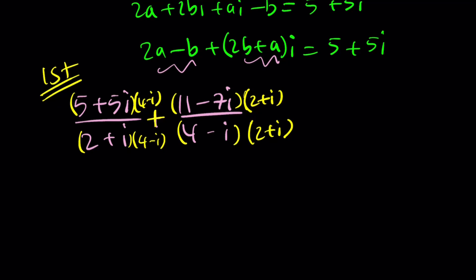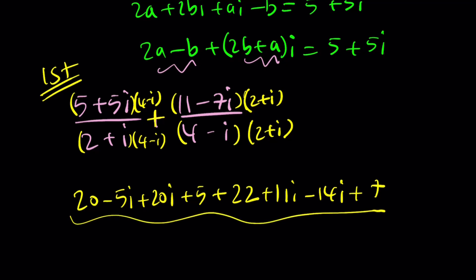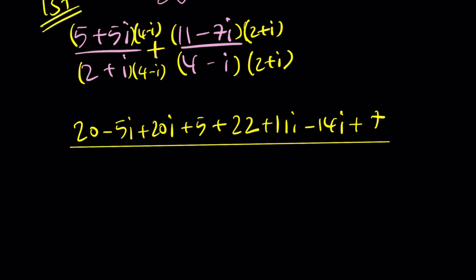Let's go ahead and distribute. 5 times 4 is 20, and then 5 times 4i minus 5i plus 20i minus 5i squared, that's plus 5. And then I get 22, and then 11i minus 14i minus 7i squared, that's a plus 7. And all of that is divided by a straight line. Now if you multiply this, you only have to do it once. That's going to be an 8, and then minus 2i plus 4i minus i squared, which is plus 1.